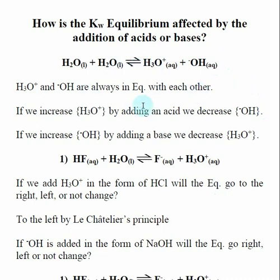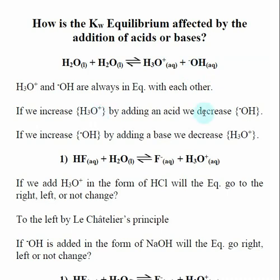As we change the concentration of one, we will be affecting the concentration of the other. Acids and bases neutralize each other — hydronium and hydroxide react with each other. So if we add hydronium to an equilibrium by adding an acid, we're going to decrease the amount of hydroxide. By Le Chatelier's principle, as we add hydronium, the equilibrium shifts to the left, using up hydroxide.